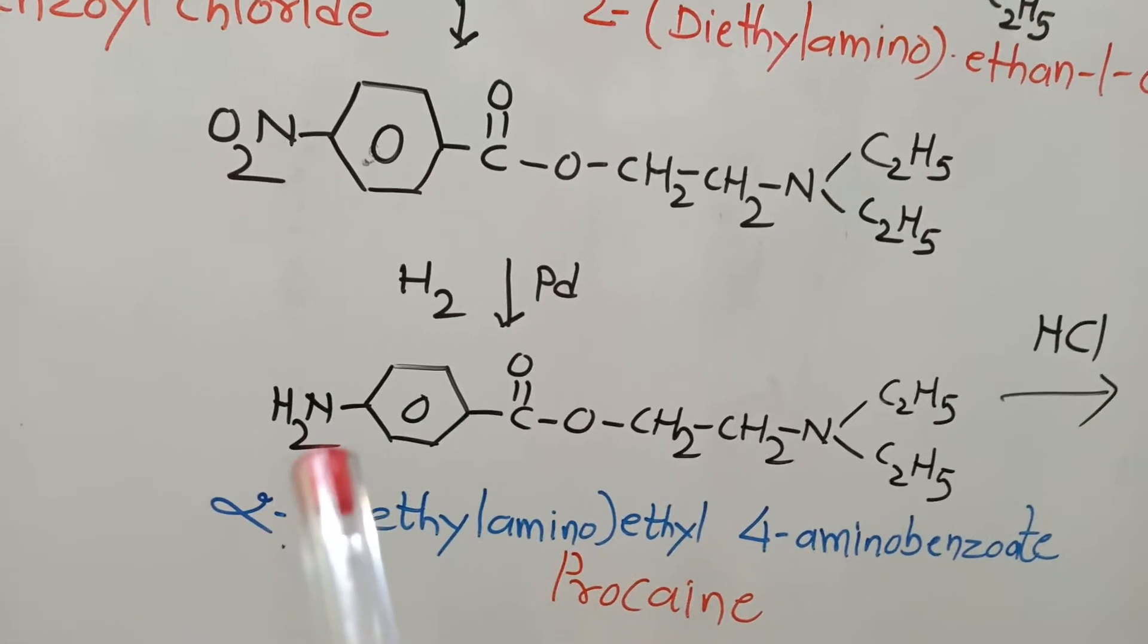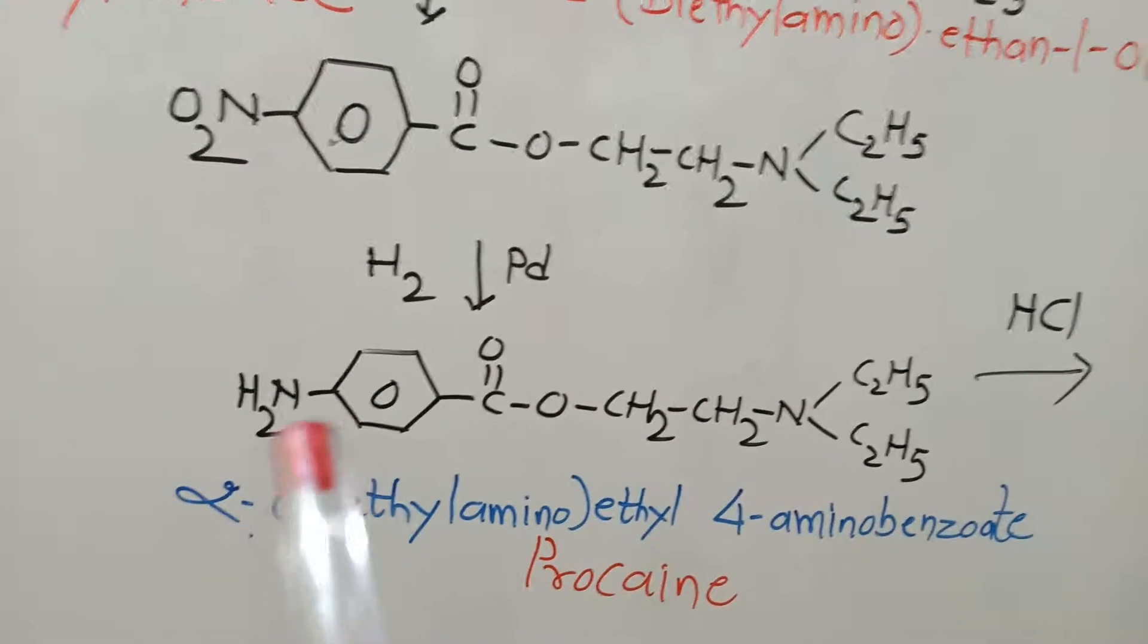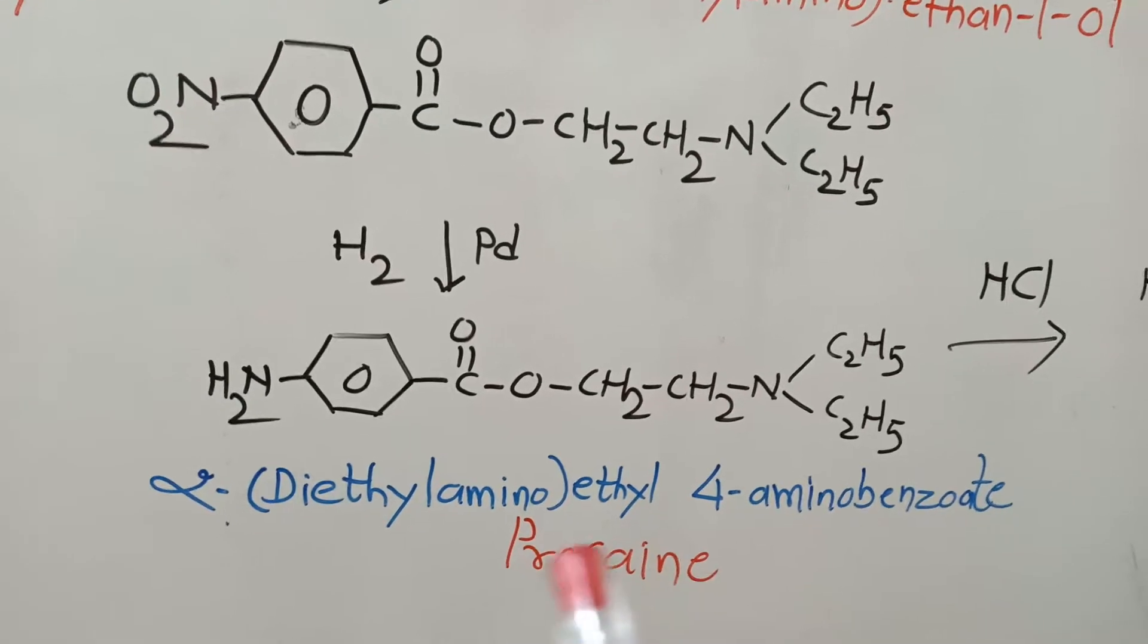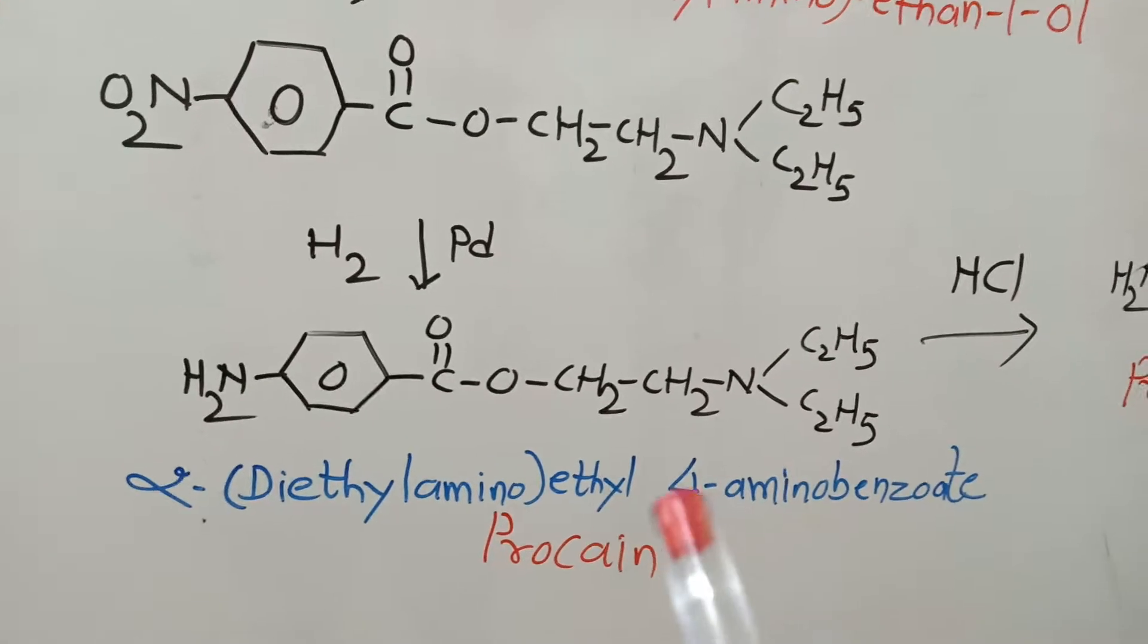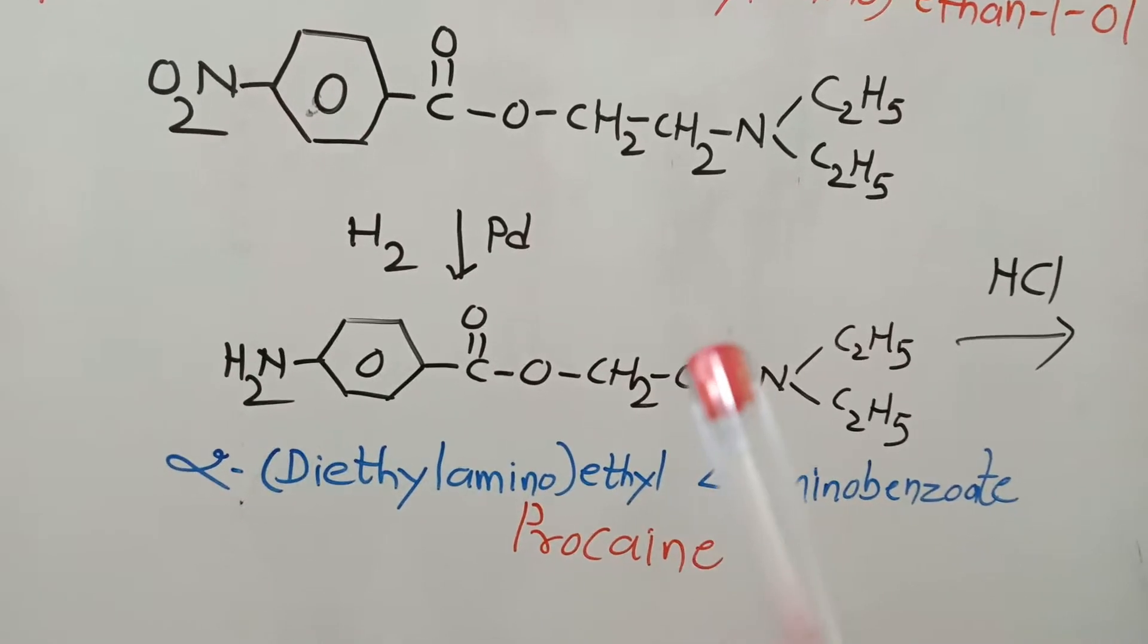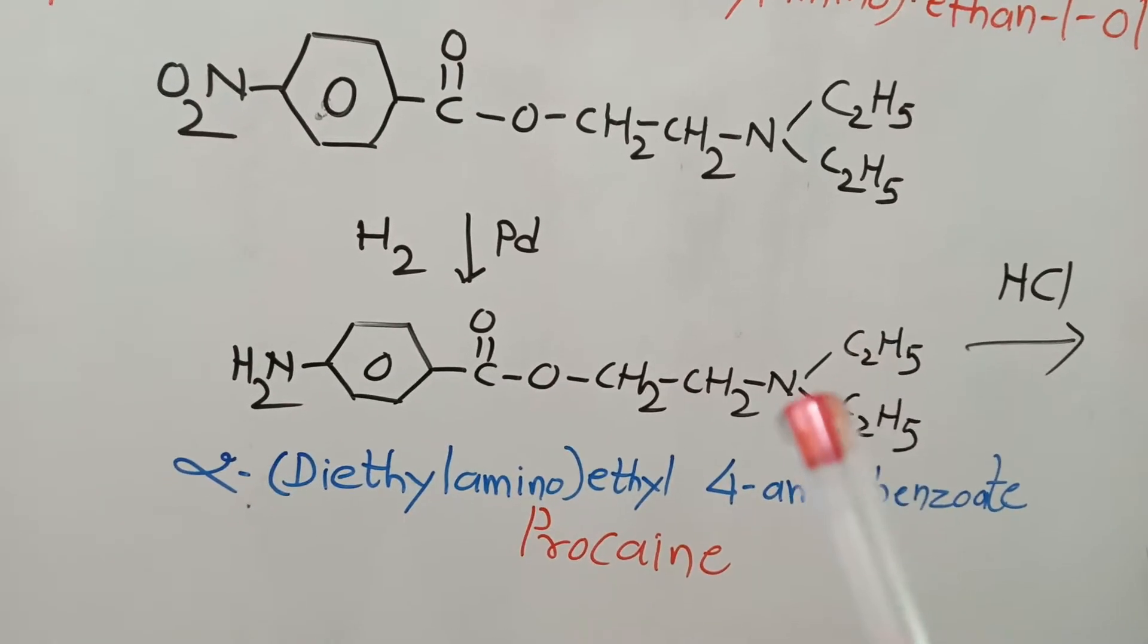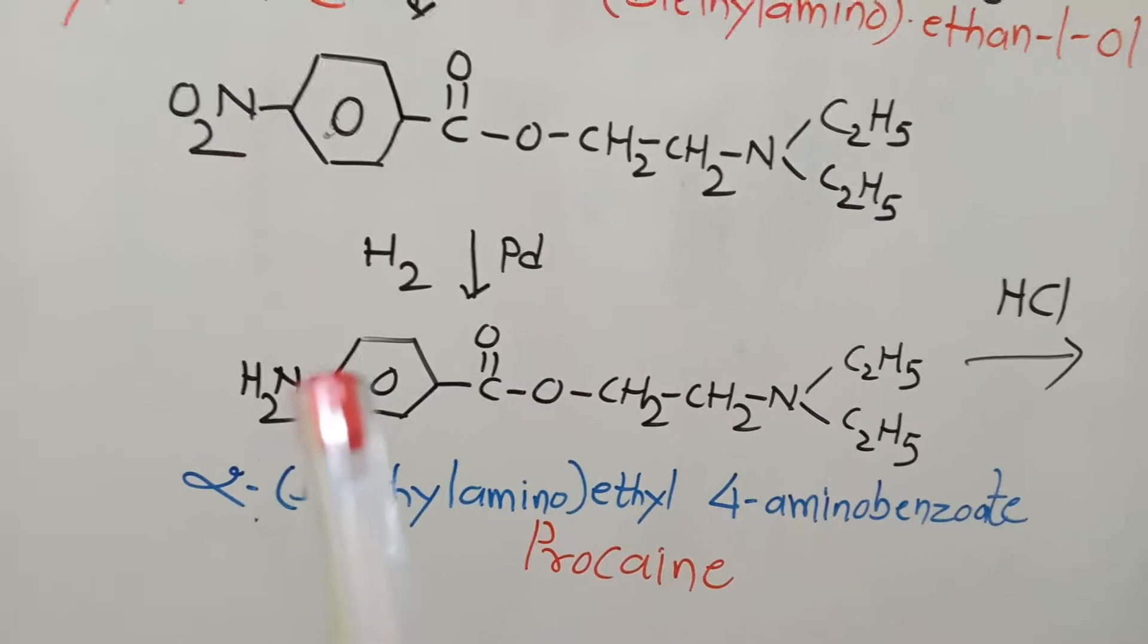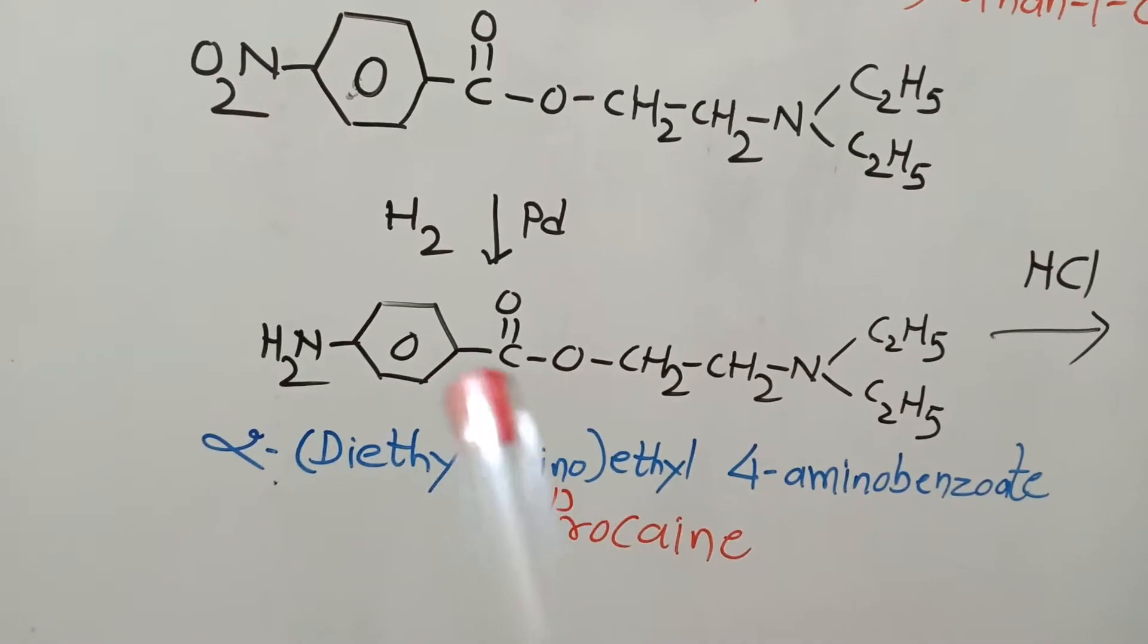With this, we obtain the title compound procaine. Its IUPAC name is 2-diethylamino ethyl 4-aminobenzoate.